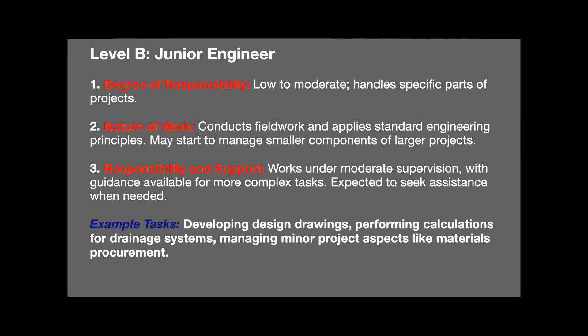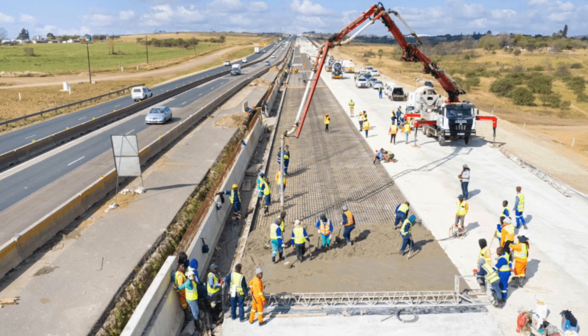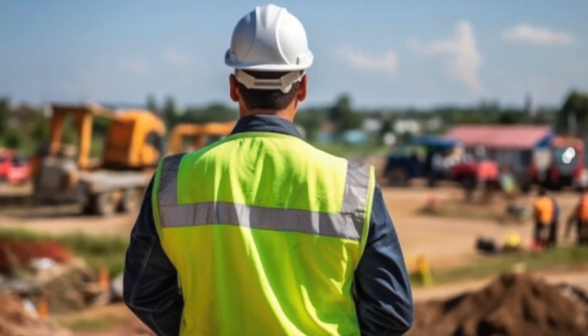Level B — moving along from level A, you'll most probably find yourself in a junior engineer position. Your degree of responsibility here would be low to moderate; you handle specific parts of the project. Your nature of work consists of conducting fieldwork, applying standard engineering principles, and you may start to manage small components of the larger project. You work under moderate supervision with guidance available for more complex tasks. Example tasks include developing design drafts, performing calculations for drainage systems, and managing minor project aspects like materials and procurement.